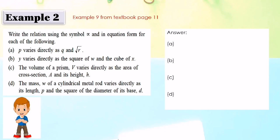V varies directly as Q and square root of R. To write in equation form: V equals K Q square root R. For part B, Y varies directly as the square of W and cube of S. Square of W is W power 2, cube of S is S power 3. So in equation form: Y equals K W squared S cubed.